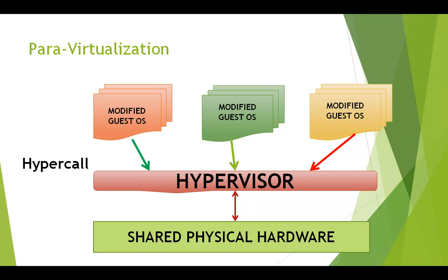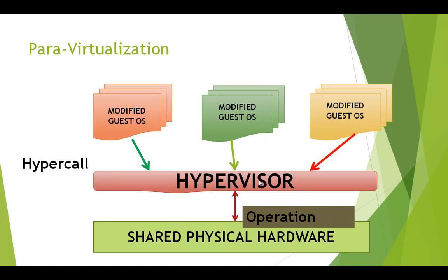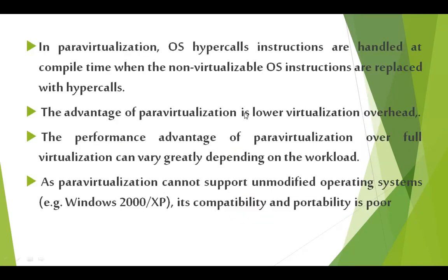The hypervisor then communicates with the shared physical hardware layer, and the hardware performs the operations. The hardware issues the results back to the hypervisor, which in turn issues the results to the respective guest operating system or virtual machine. This is the concept of para virtualization.